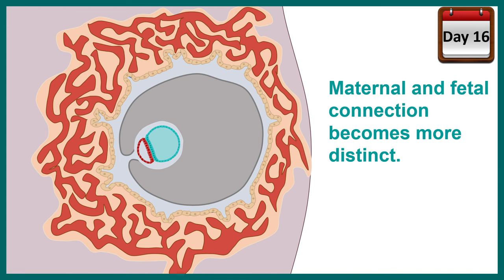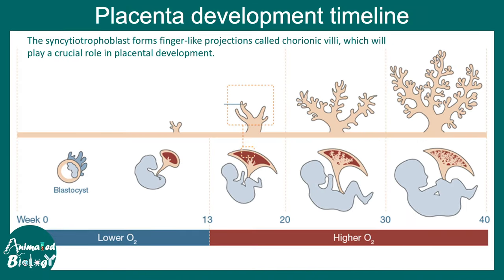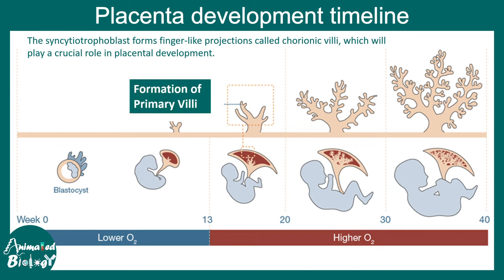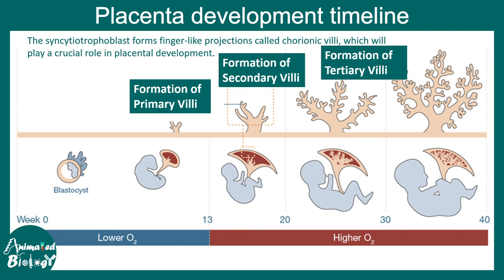Eventually, there are many more morphogenetic events that make the placenta. The syncytiotrophoblast initially forms finger-like projections known as chorionic villi, and these projections become more and more elaborate over time. Looking at a gestational week timeline, the villi start as a primary villus, which eventually branches to form secondary villi, and ultimately gives rise to tertiary villi.